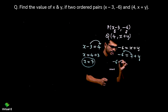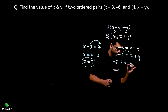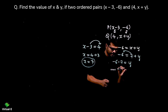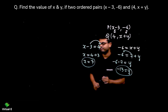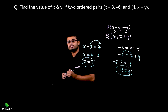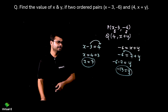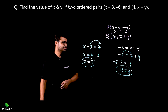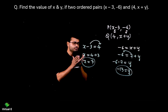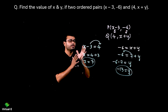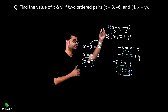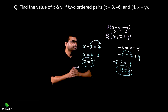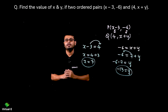Now using x equals 7 in the y-coordinate equation: minus 6 equals 7 plus y. Shifting 7 gives minus 6 minus 7 equals y, so y equals minus 13. The value of y is minus 13 and x is 7. This was the concept of equal ordered pairs — x-coordinates are equal and y-coordinates are equal.